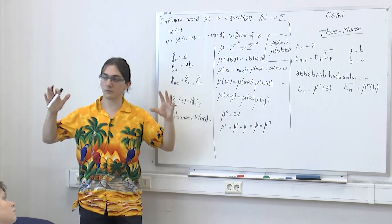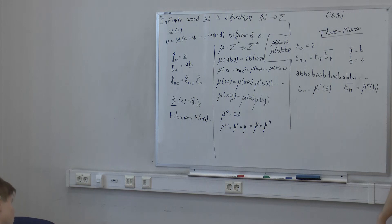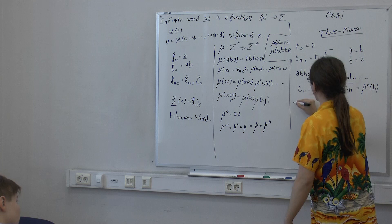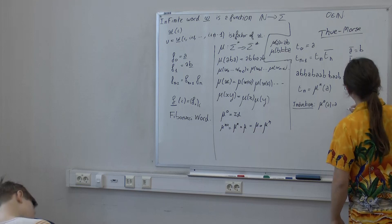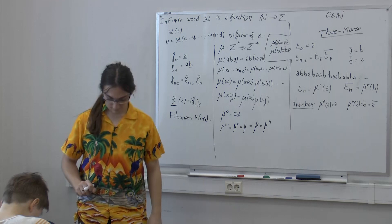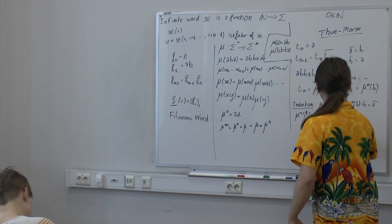Morphisms can express things, and in particular I want to give a name to this limit. I'll denote it mu^omega(a). What I mean is: when you have a sequence mu^n(a) as n grows, and the sequence converges, I will write it mu^omega(a). Some authors write mu^infinity(a). This just means you take a, then the image of a, then the image of the image, and so on — and if this sequence has the good convergence property, we call the infinite word it reaches mu^omega(a).